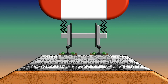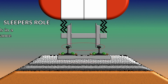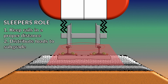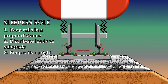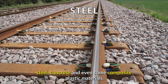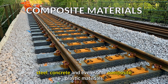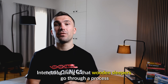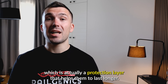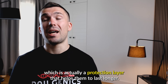Railway sleepers are positioned and lying below the rails and fastening system. Their function is to keep rails at a proper distance from one another, to distribute loads from rails down to the subgrade, and to keep rails together with the fastening system upright. They also play a main role in track stability as they are positioned in ballast. Sleepers can be made of wood, steel, concrete, and even some composite plastic materials. Wooden sleepers go through a process called impregnation before being laid in the ground, which is a protection layer that helps them last longer.